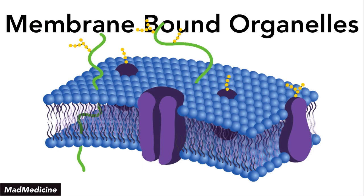This is what the membrane-bound organelle looks like. You have the hydrophobic head and hydrophilic tails. This is a two-part structure — two layers to the membrane itself. In the membrane, you're going to have channel proteins, which allow things to enter through the membrane. Very important. You will also have other components like cholesterol and other proteins in the membrane. Very high-yield concept.